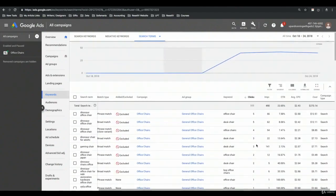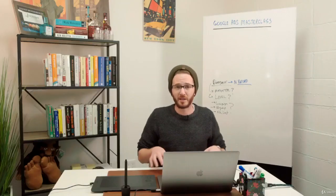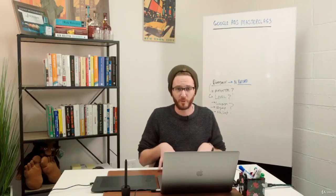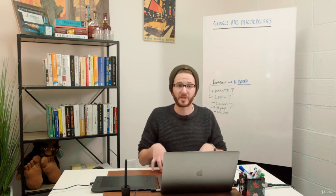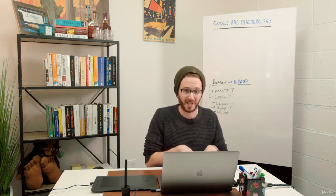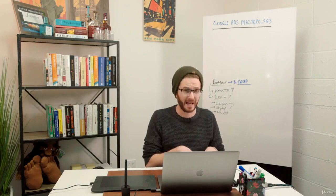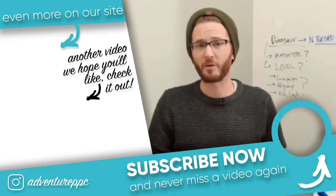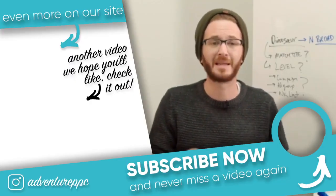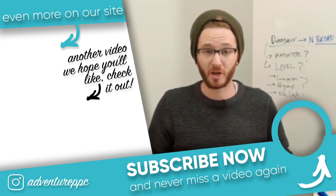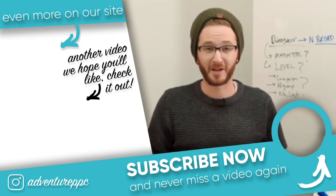This isn't a very big ad group, so it's a small variation of keywords. Now that we've been into the search terms report for the first time, you have a good idea of some basic principles and adding negative keywords at the campaign level. In the next lecture, I'm going to take you into a live account and show you how I would go about filtering search terms to find the most valuable negative keyword opportunities. I'll see you guys in the very next lecture.